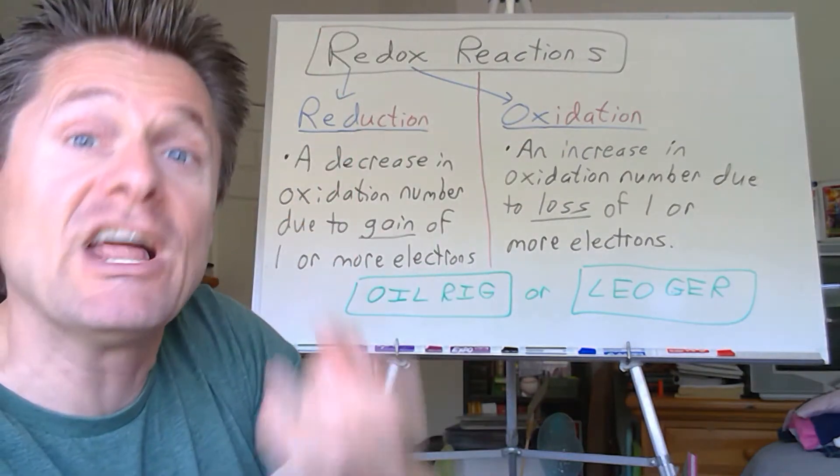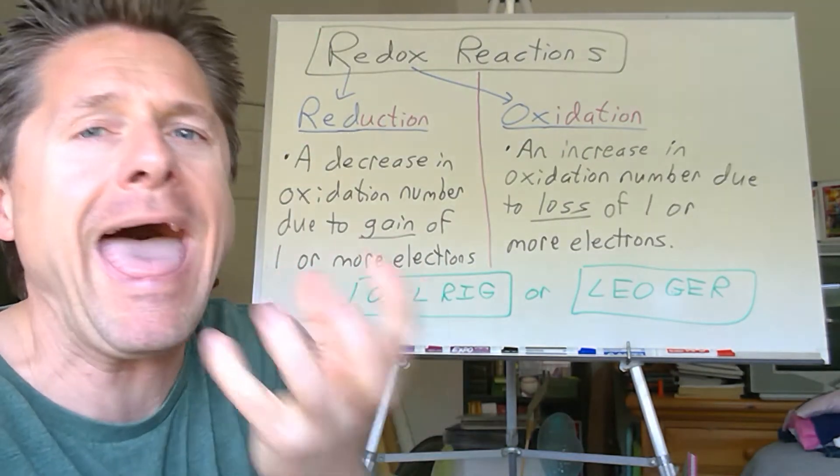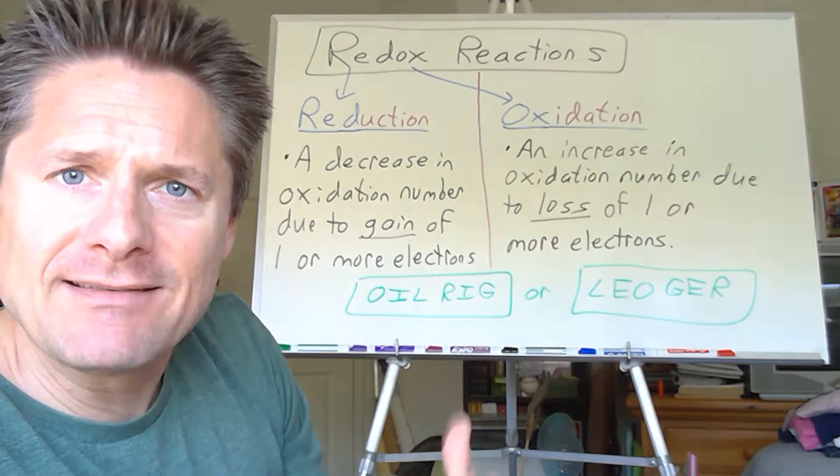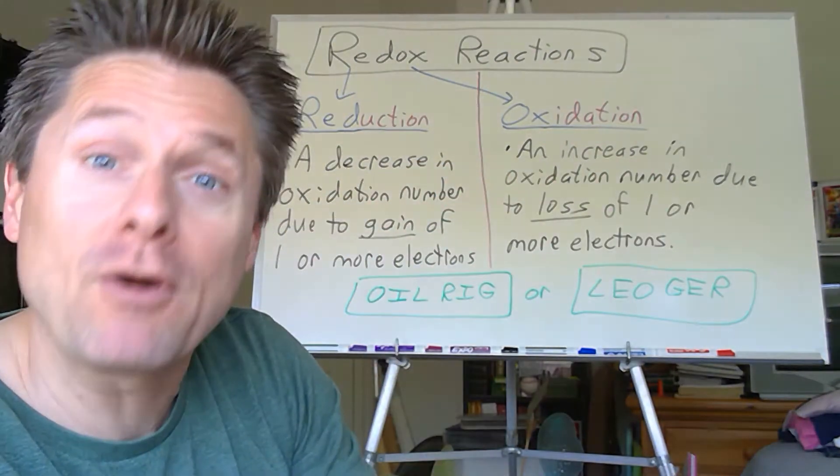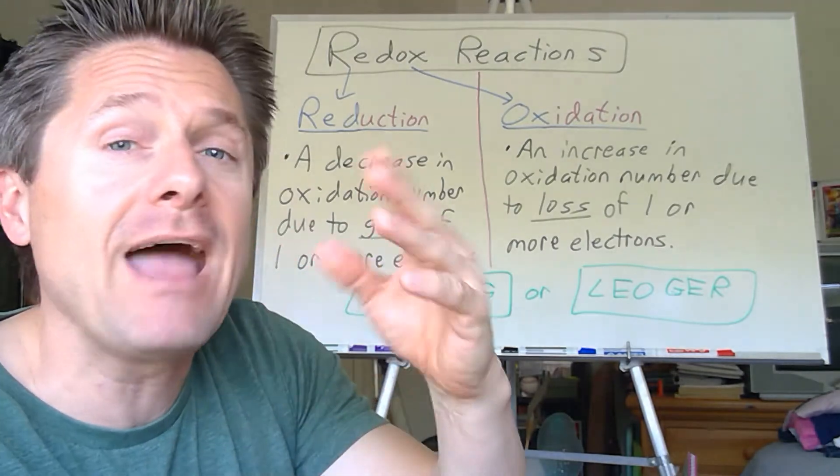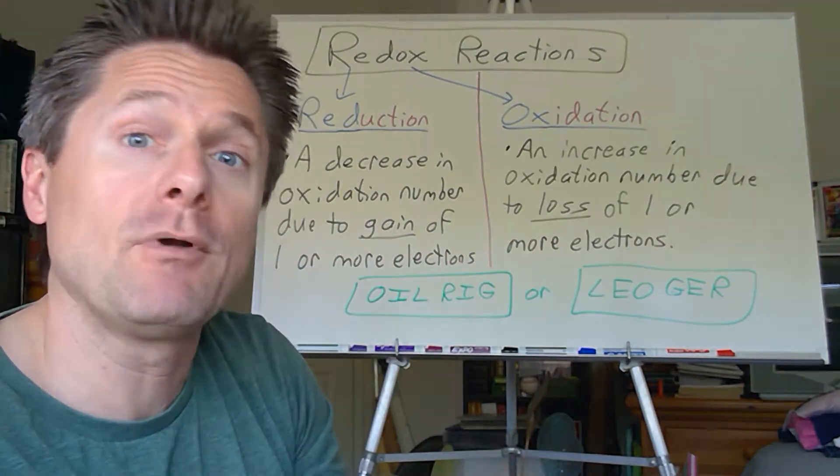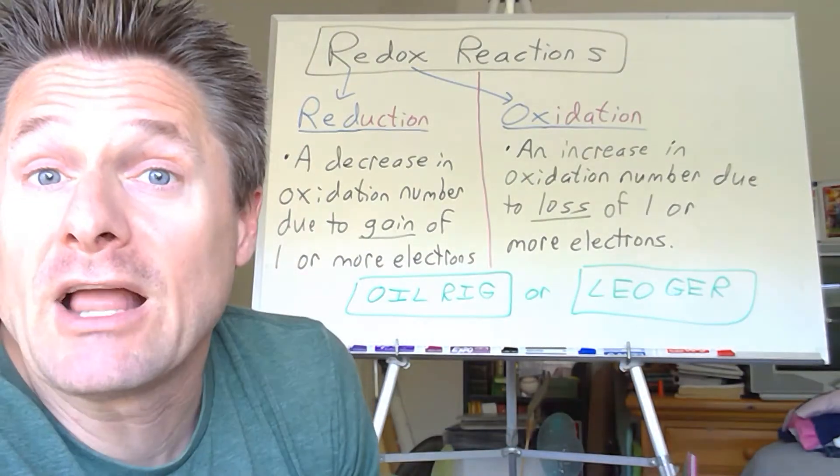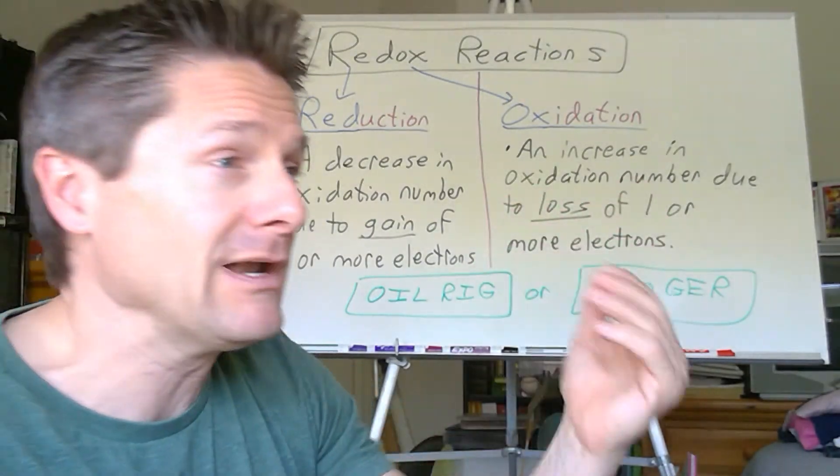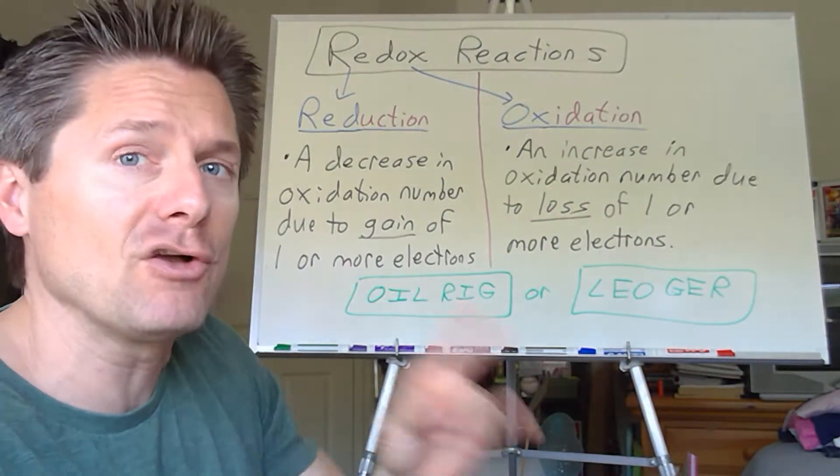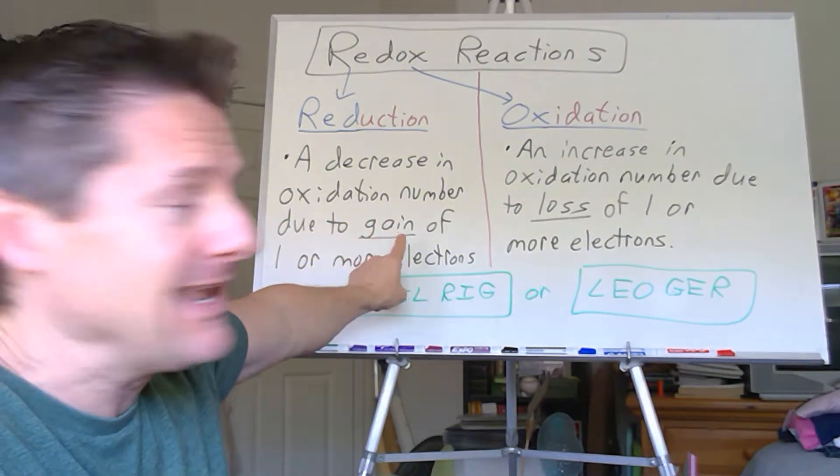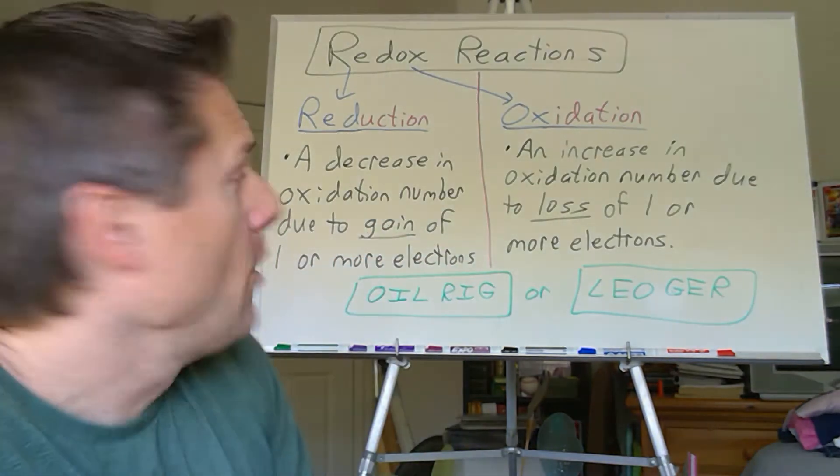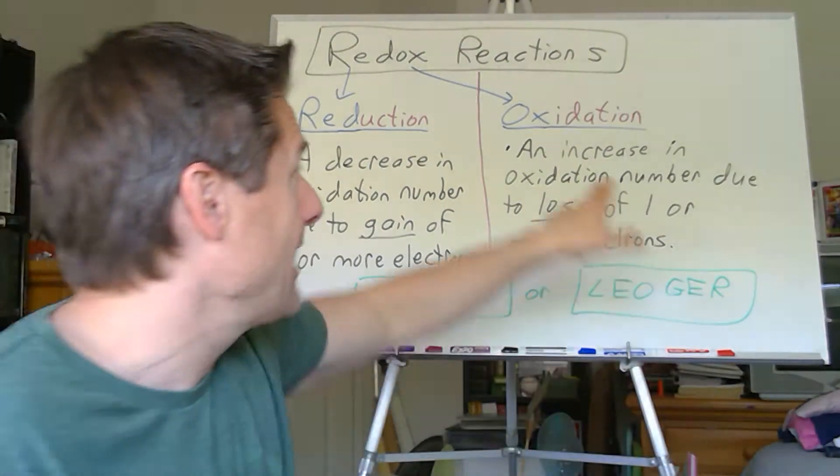So reduction, that means you have a reduction or a decrease in your oxidation number. So some atom, some element, whether it's by itself or in a compound or some species, gains an electron, meaning it gains a negative particle, so its oxidation number drops. So maybe it was a five, and if it gains an electron, it goes to a four. If it was a zero and it gains an electron, it goes to negative one. If it was a negative three, it gains an electron, goes to negative four. Doesn't matter how many you gain, as long as it's one or more electrons.